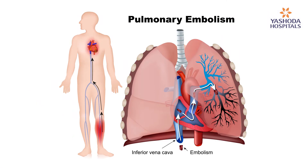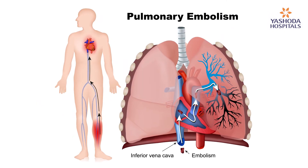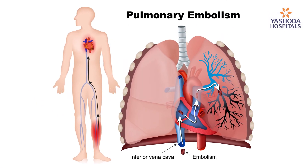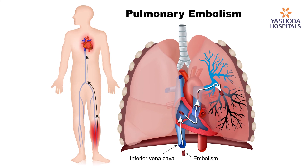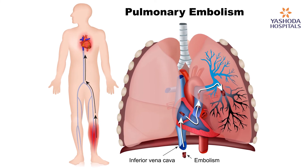Doctor, does DVT cause pulmonary embolism? Yes, that is one of the devastating complications of deep vein thrombosis, where the thrombus formed in the leg vein mobilizes from there and travels to the lung arteries, causing pulmonary embolism.